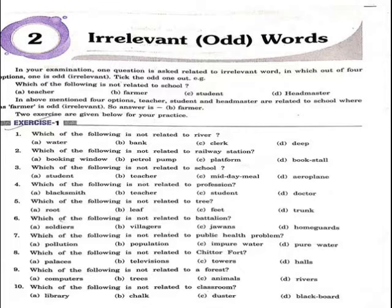Example: which of the following is not related to school? Your options are teacher, farmer, student, headmaster. In the above mentioned four options, teacher, student, and headmaster are related to school, whereas farmer is odd and irrelevant. So the answer is farmer.